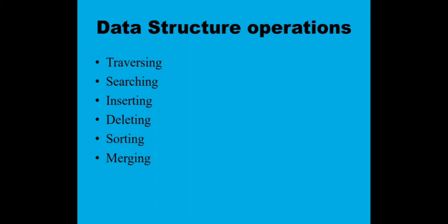The next operation is searching. What do you mean by searching? Searching means finding the location of a particular record with a given key value, or finding all records that satisfy a given condition. This is the concept of searching — it is a process in data structures where we try to find something.